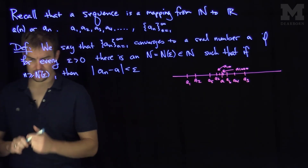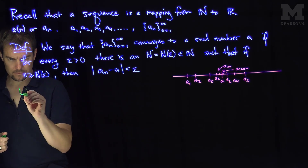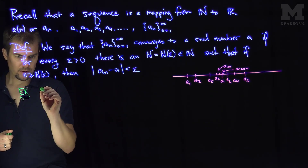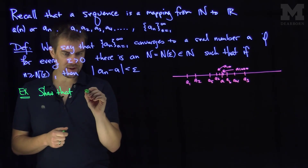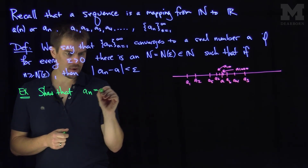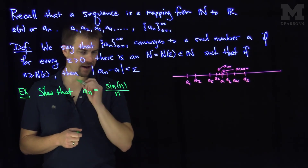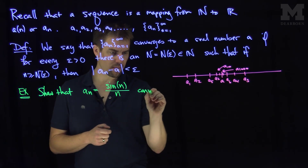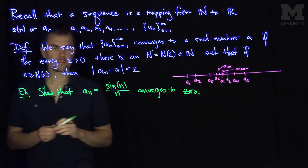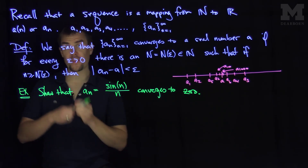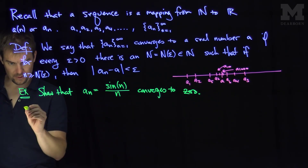So let's do a simple example. Here's our example. Let's show that the sequence a_n, which is sine of n over n, converges to zero. So let's do some work and then write down the formal proof. Here's our scrap work, our side work.